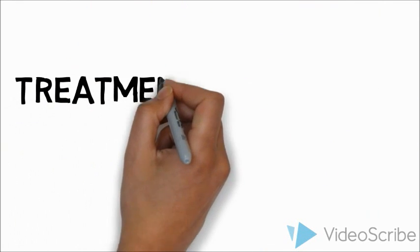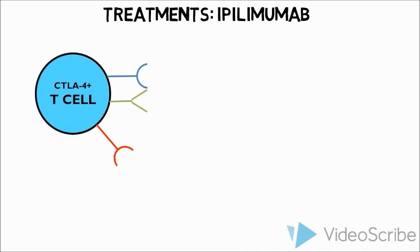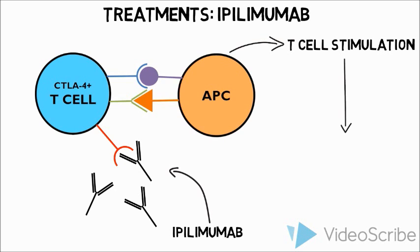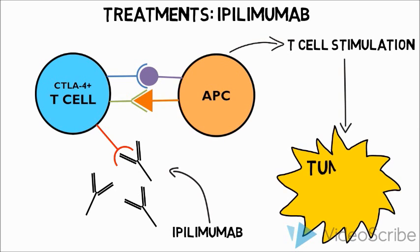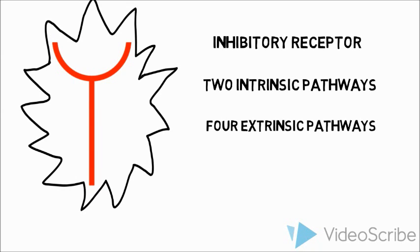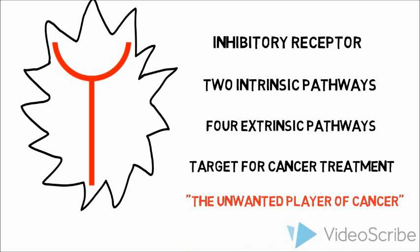So how does this all relate to cancer? Ipilimumab is a treatment that blocks CTLA-4 using inhibitory antibodies. This allows CD28 to bind CD80/86, which stimulates T-cells to destroy tumor cells. To summarize, CTLA-4 is an inhibitory receptor that functions through two intrinsic pathways and four extrinsic pathways. Blocking CTLA-4 is a target for cancer treatment, and therefore CTLA-4 is the unwanted player in cancer.